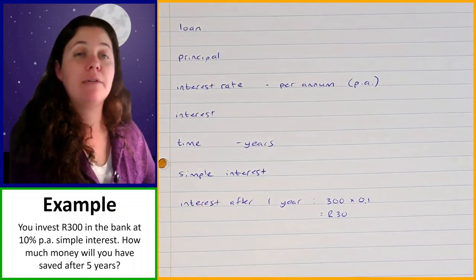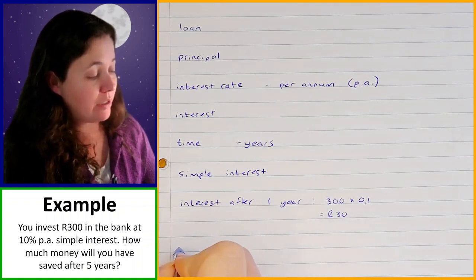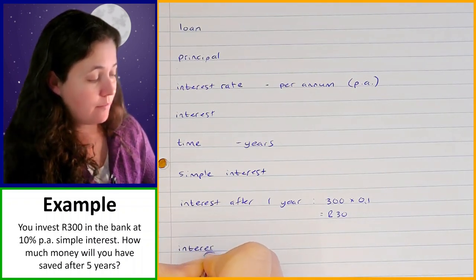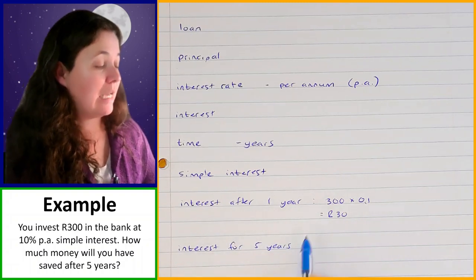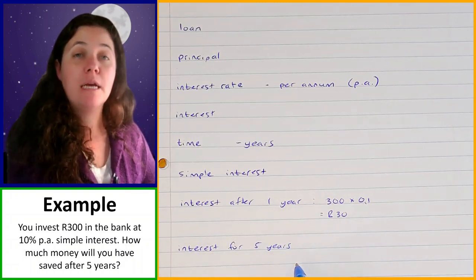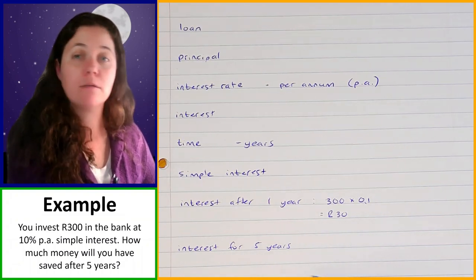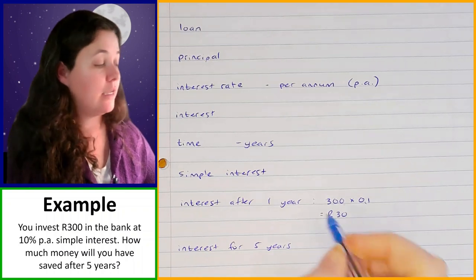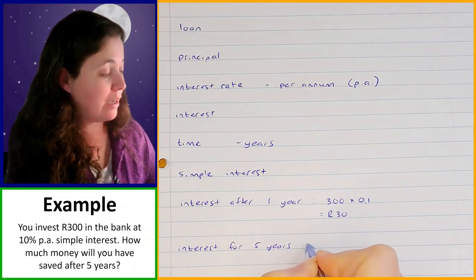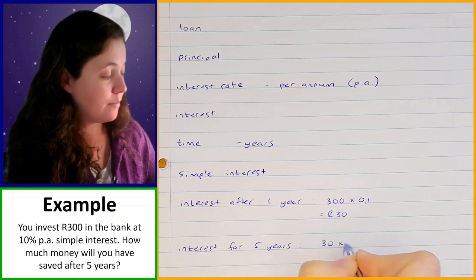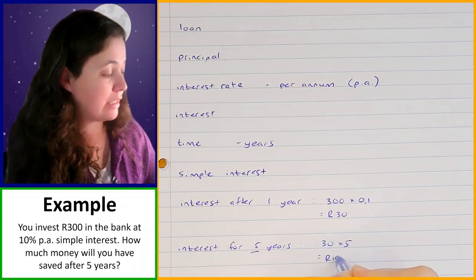But you're going to have this investment for five years, so let's find out how much interest you'll earn for five years. Because this is simple interest, the amount of interest every year is going to be the same — 10% of the principal amount every single year. So we multiply that 30 rand by five, because it's for five years, and that gives us 150 rand.